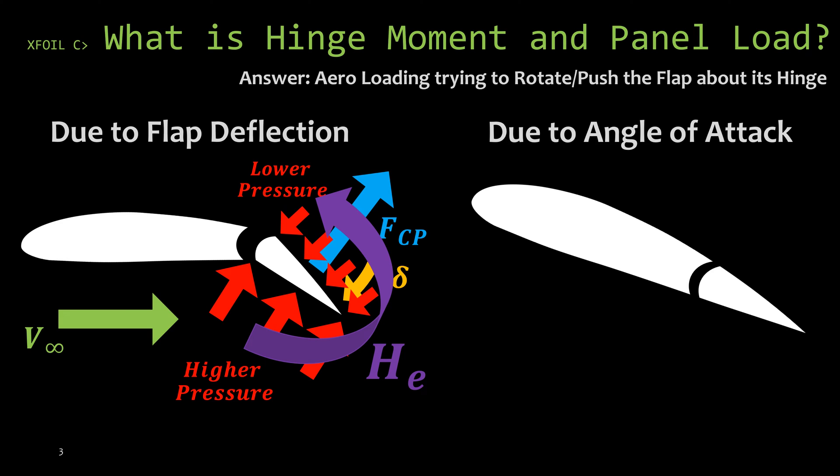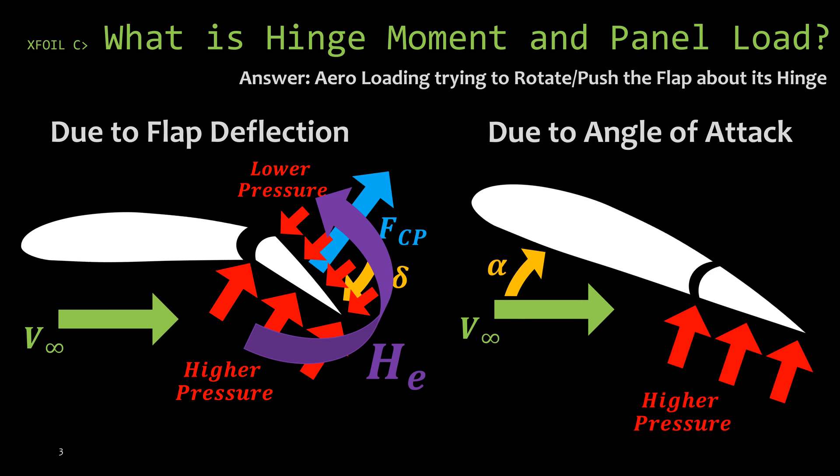The second cause of hinge moment would be due to an angle of attack. Let's say we have our airfoil and we don't have the flap deflected, but we pitch up the aircraft an angle of alpha. This creates a similar situation with higher pressure on the lower surface and lower pressure on the upper surface. This is going to want to deflect the control surface upward in a negative direction, even though we want to keep it at zero degrees deflection.